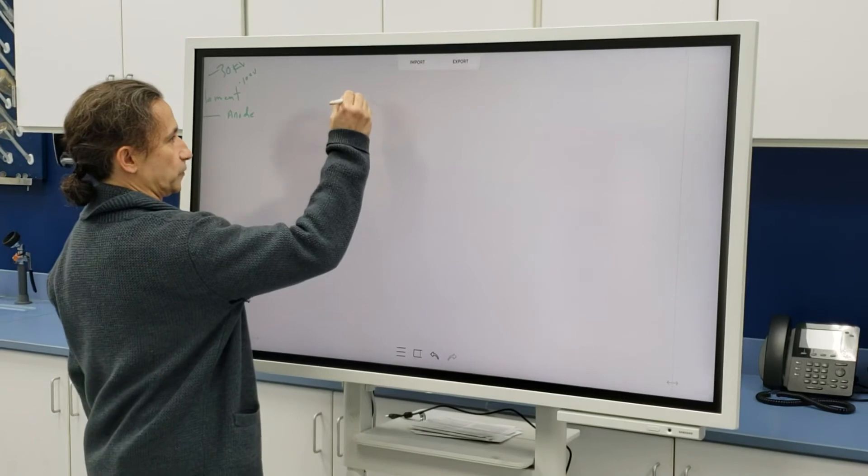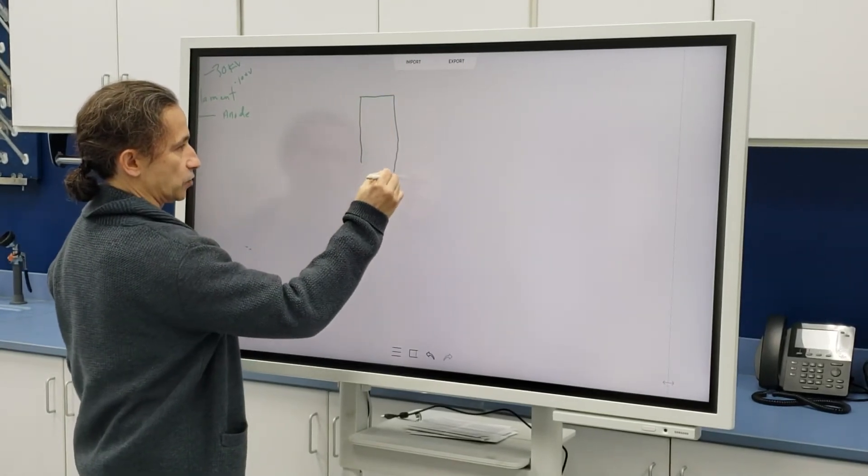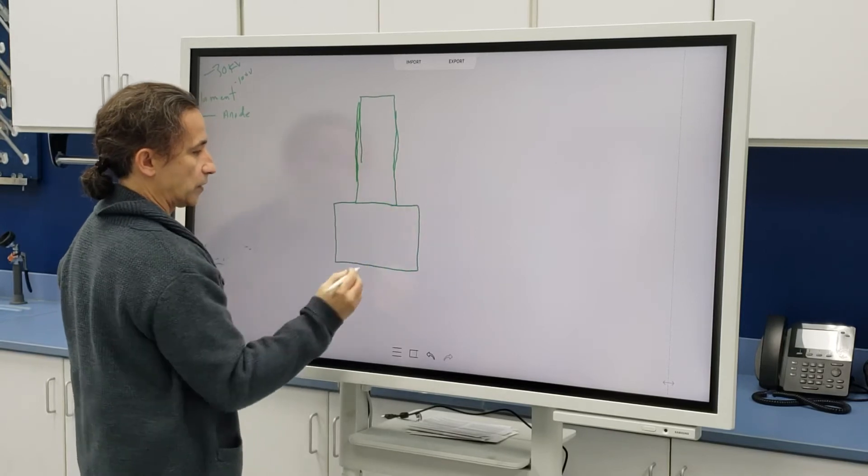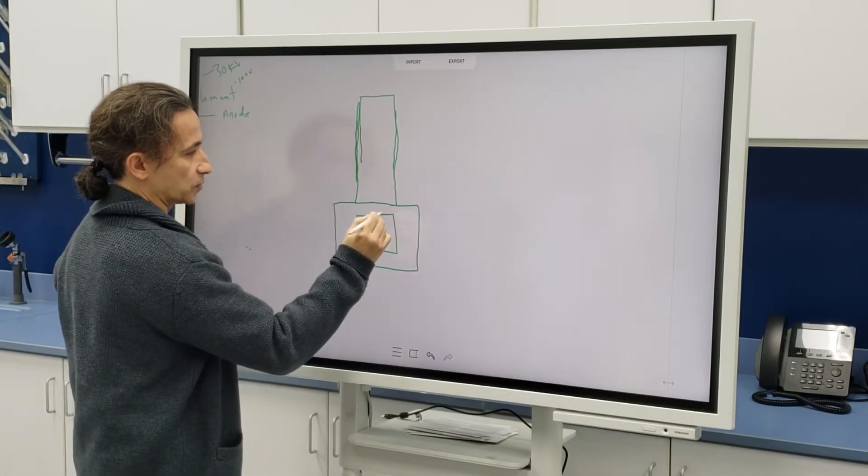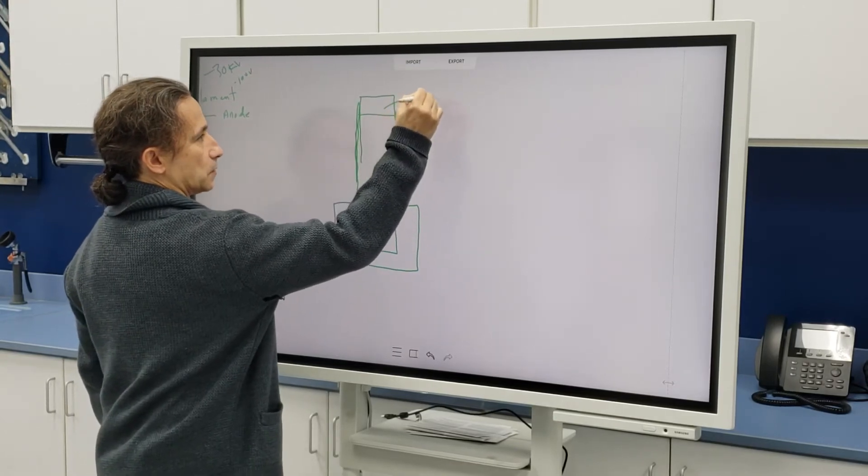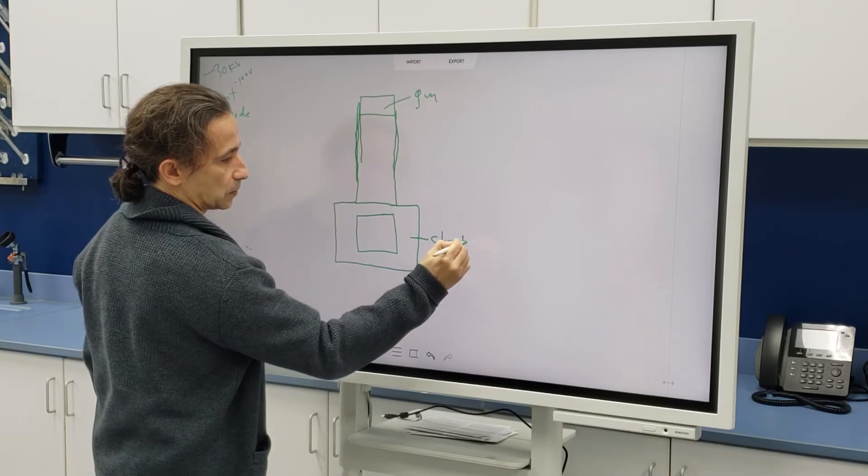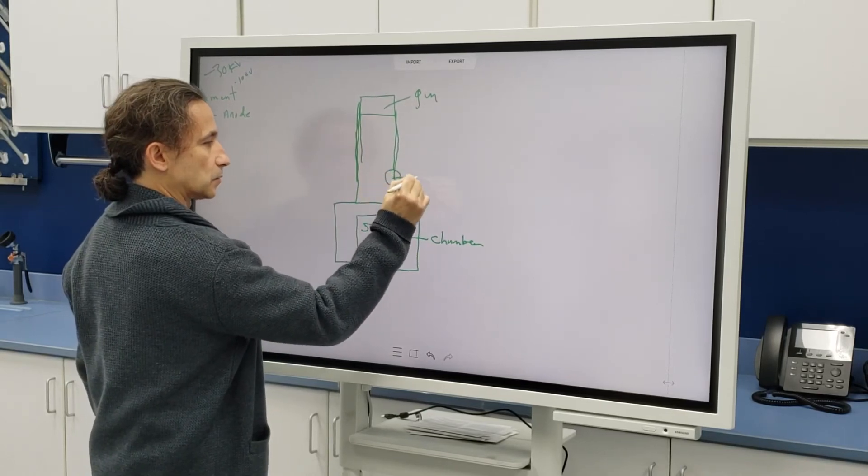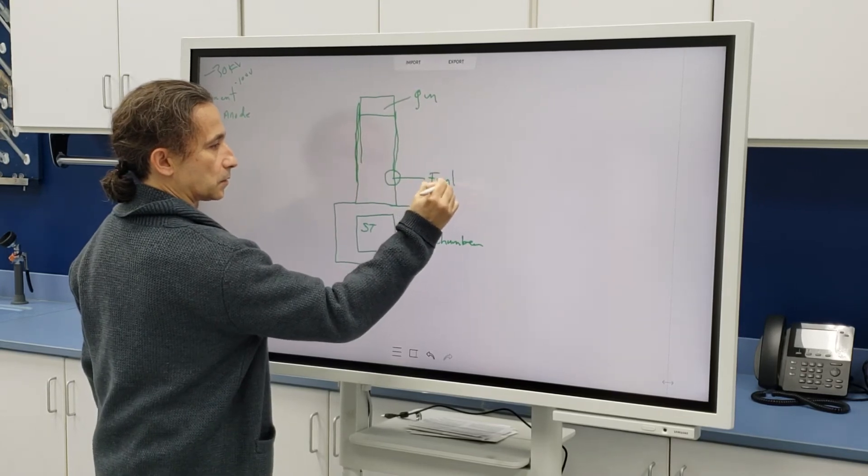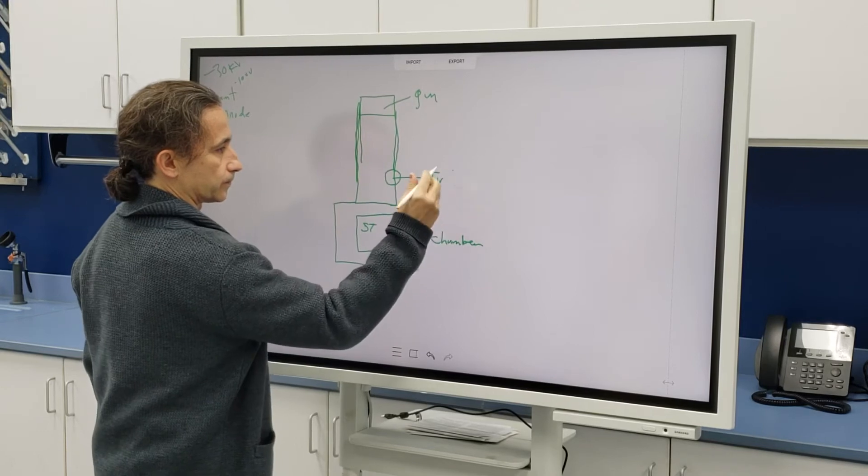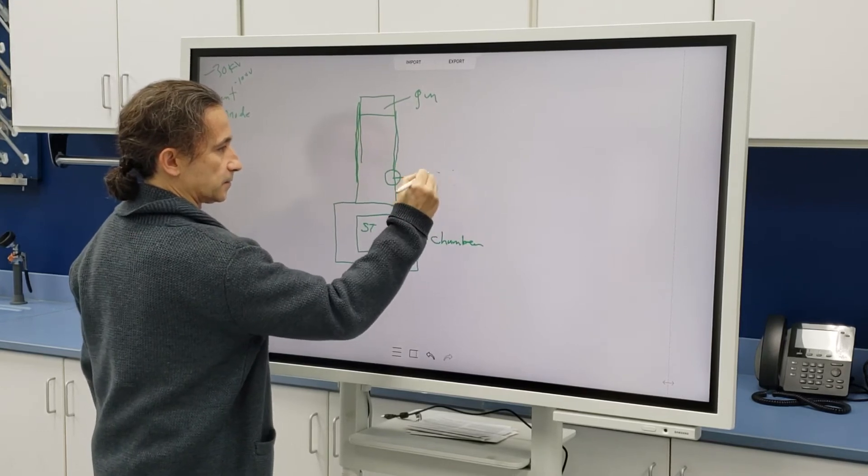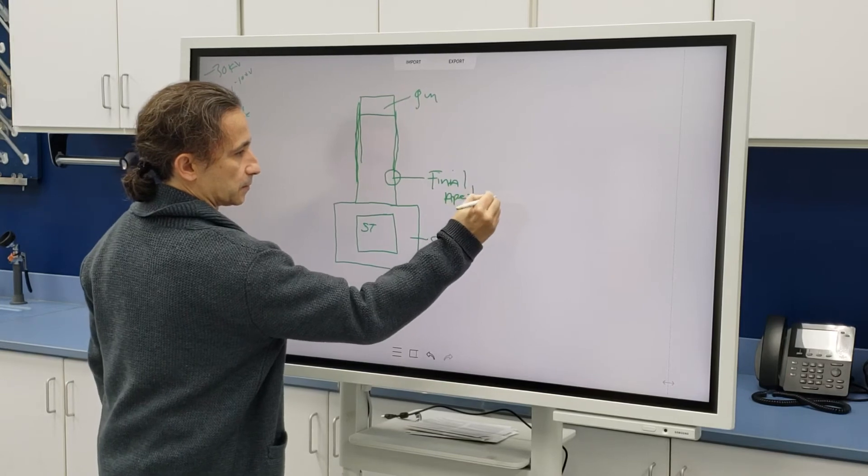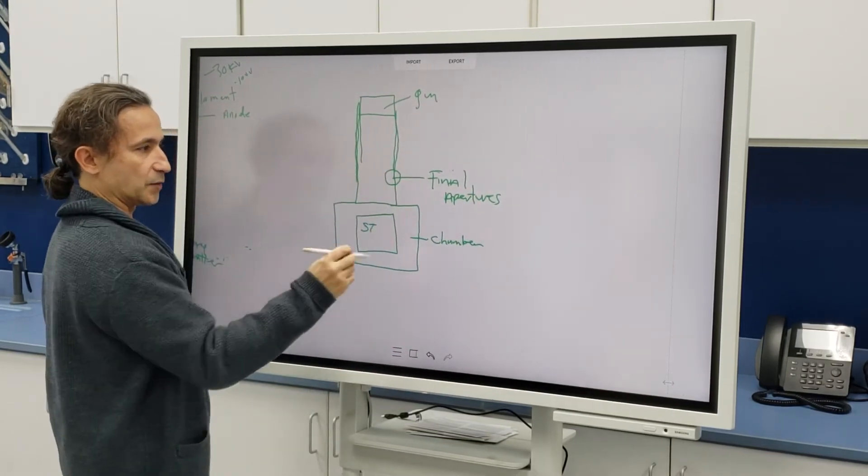So if we were to draw a very rough interpretation of this column, it's a very straight piece. This would be your stage door that opens. This would be your gun section up here. Chamber. Stage. What also is on this column is the final aperture assembly.